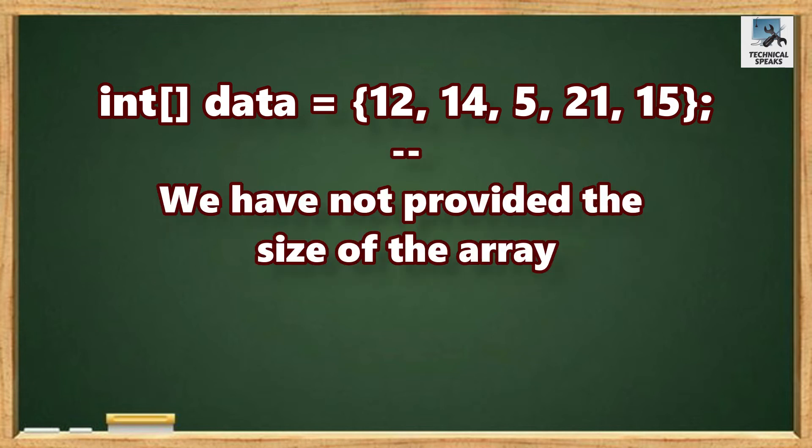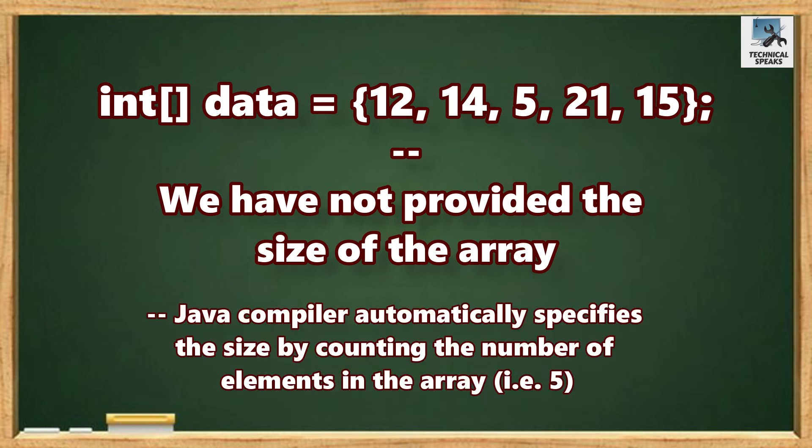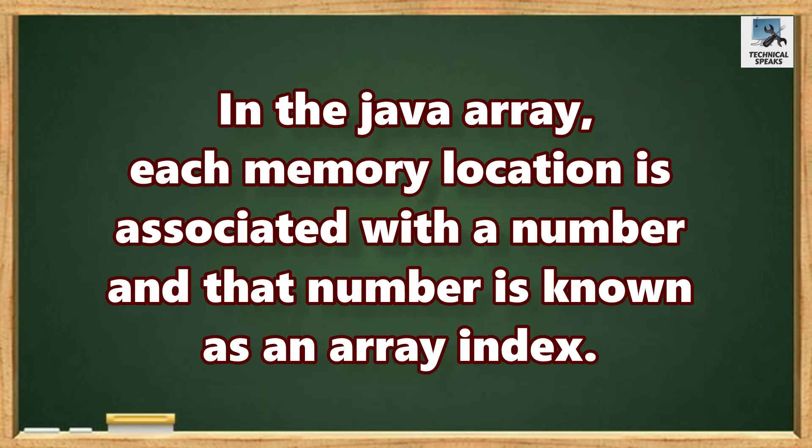we have not provided the size of the array. In this case, the Java compiler automatically specifies the size by counting the number of elements in the array, which is 5. Also, in Java arrays, each memory location is associated with a number, and that